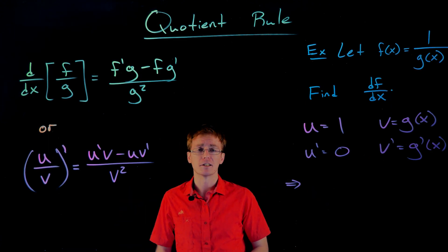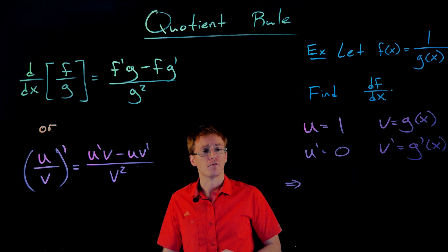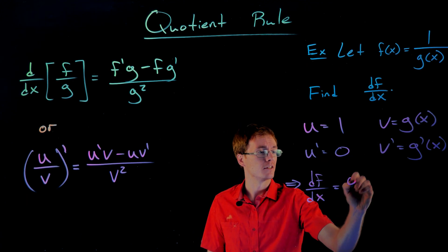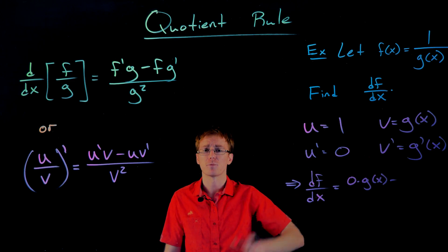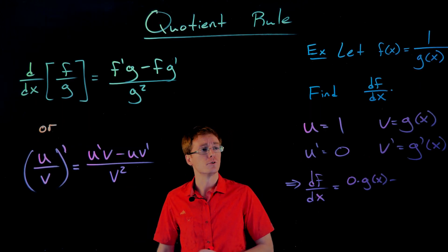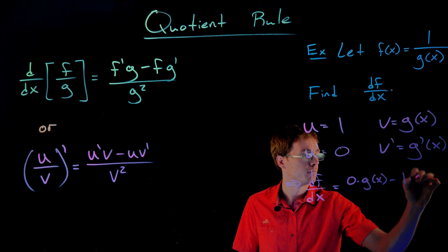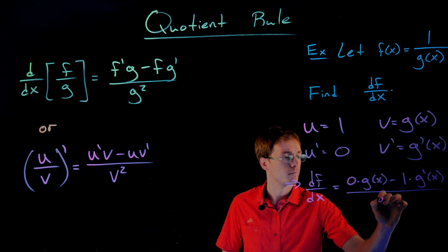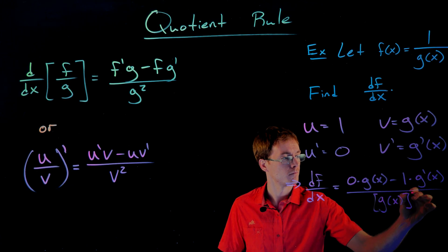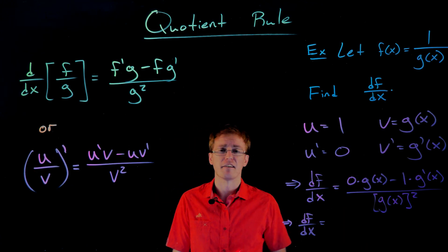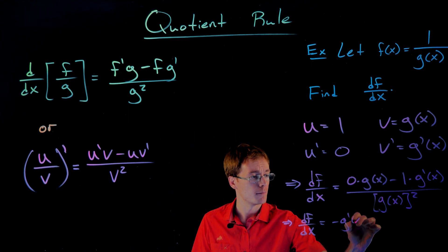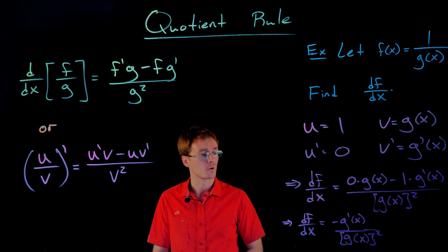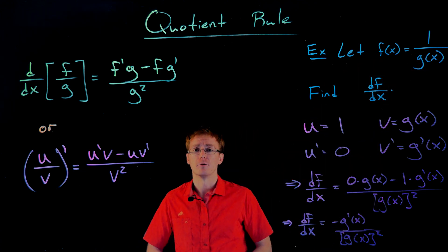Now using our quotient rule formula, we can piece together the derivative of any reciprocal function. The derivative of f with respect to x is u prime times v — that's 0 times g(x), which vanishes — minus u times v prime, which is 1 times g prime, all divided by our original denominator squared, which is g squared. Simplifying, the first term vanishes because of multiplication by 0, giving us negative g prime of x over g(x) squared. That's a nice shortcut for taking the derivative of functions of the form 1 over some differentiable function.